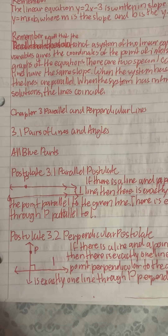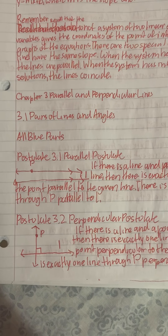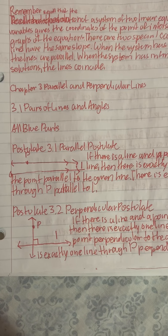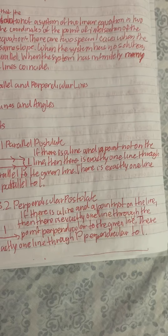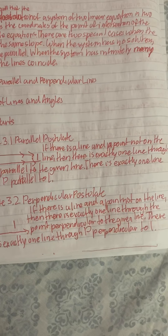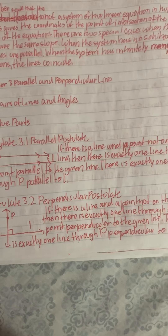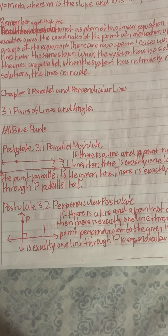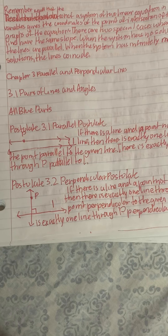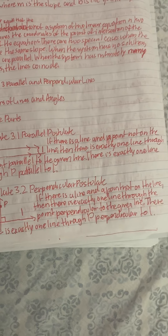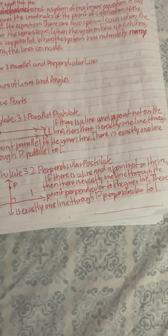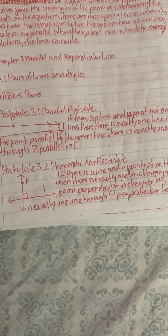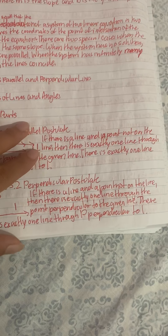Chapter 3: Parallel and Perpendicular Lines. 3.1 Pairs of Lines and Angles — All Blue Parts. Postulate 3.1, Parallel Postulate: If there is a line and a point not on the line, then there is exactly one line through the point parallel to the given line. Postulate 3.2, Perpendicular Postulate: If there is a line and a point not on the line, then there is exactly one line through the point perpendicular to the given line.